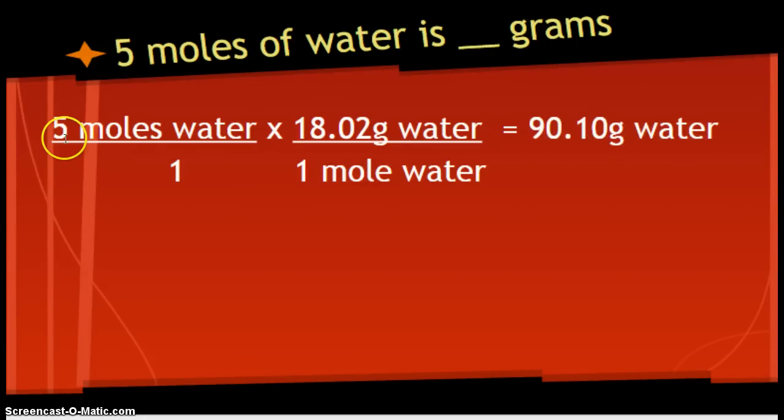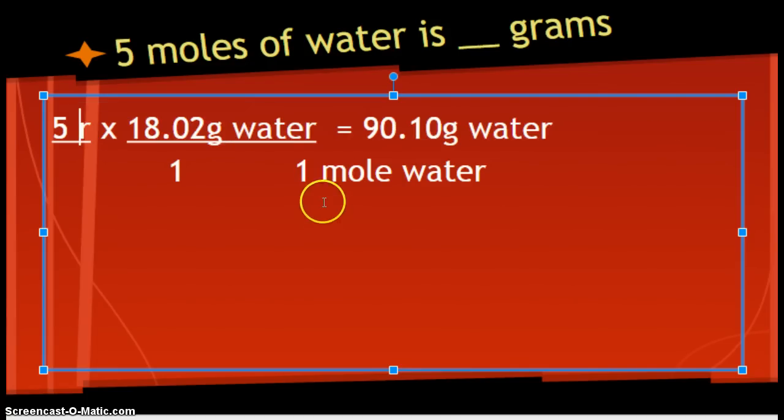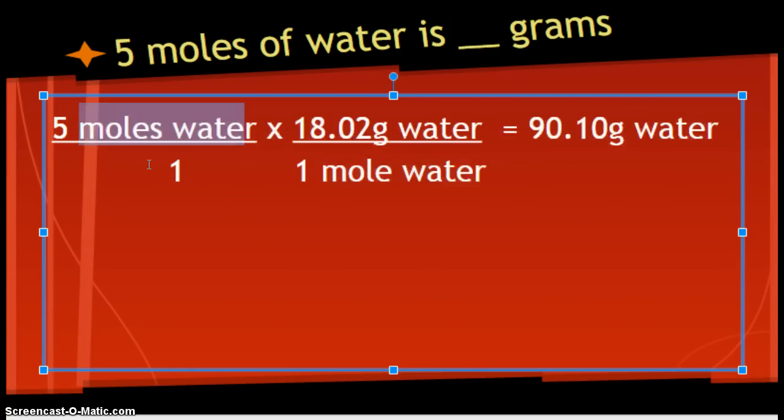Put it in your calculator. I multiplied 5 times 18.02. You multiply by everything on the top. You divide by what's on the bottom. But, moles water canceled out. And, so, all that's on the bottom are 1. So, that's why we ignored it. Alright.